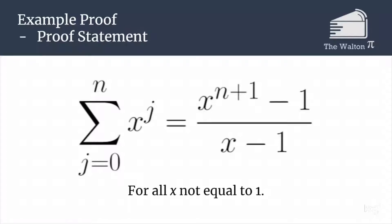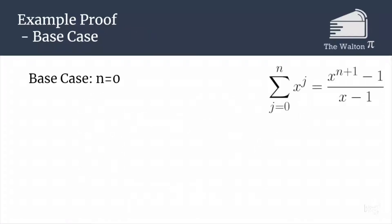To start off, we need to establish our base case. Our base case is going to be n equals 0. We are going to check that this is true if n is equal to 0 for any x, as long as x is not 1.